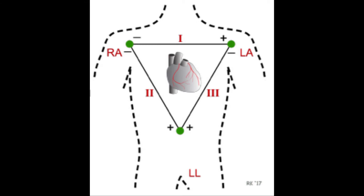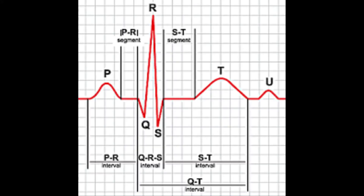We use lead 2 as the most common for simple rhythm interpretation because it's aligned fairly well with the direction the heart sits in the chest. Most of the electricity is traveling roughly from your right shoulder to your left hip. In lead 2, we're measuring electrical activity from the left leg toward the right arm, which is why most lead 2 views show a nice big positive deflection of the QRS.